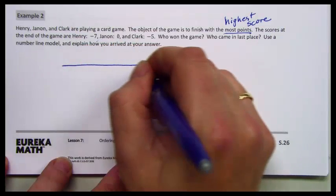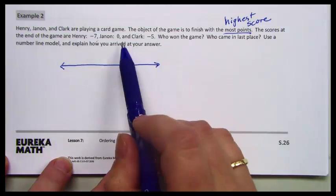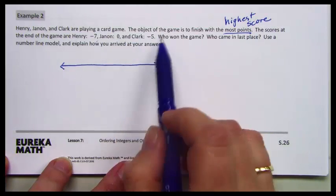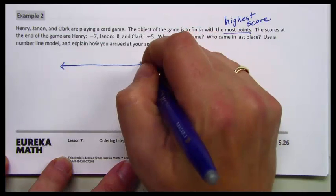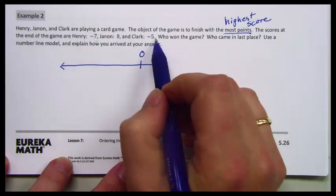So first we need a number line. And on this number line, since we have negative numbers and 0 but no positive numbers, I'm going to put 0 over to the right.